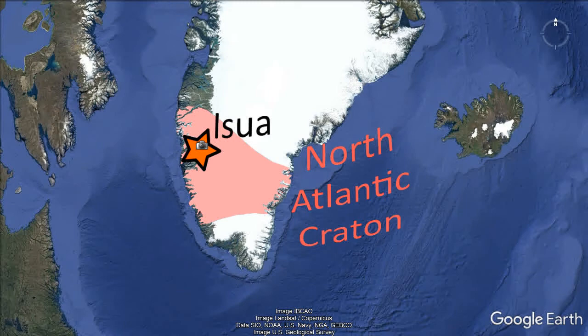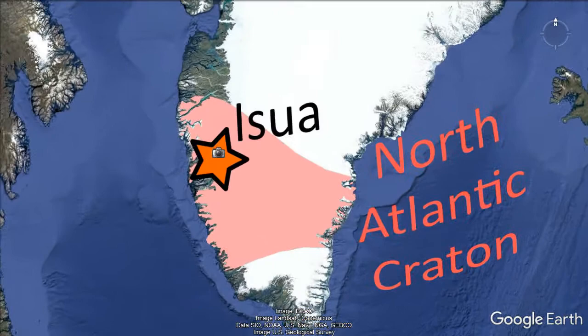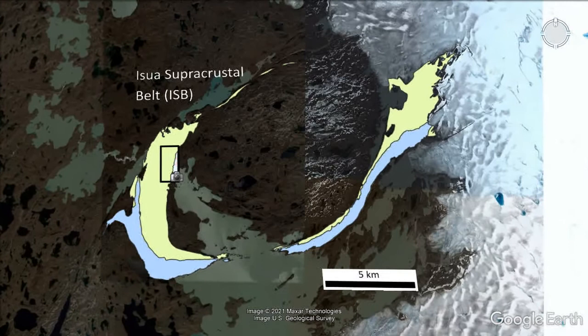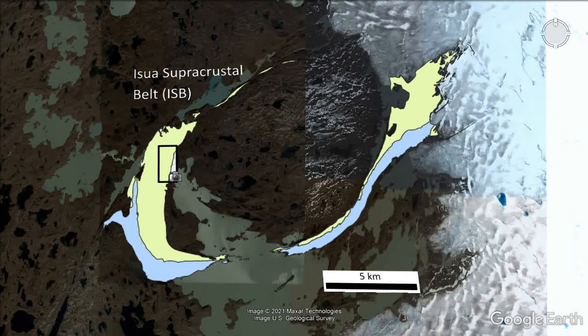The Ischewod supercrustal belt is found in the Isukasia gneiss complex, which is predominantly TTG gneiss older than 3.6 billion years. Zooming in, you can see the Ischewod supercrustal belt: in green is the 3.7 billion year old sequence and in light blue is the 3.8 billion year old sequence. The 3.8 billion year old sequence wraps around the outside of the belt, and both sequences are associated with TTGs of a similar age.